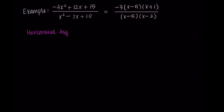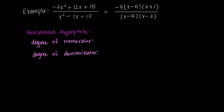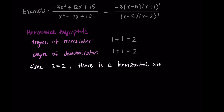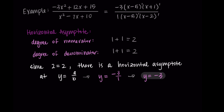Now we do the horizontal asymptotes. We compare the degrees of the numerator and the denominator. Looking at the standard form, the highest degree exponent is 2 for both polynomials — or using the factored form, 1 plus 1 equals 2 for each. Since the degrees are equal, there is a horizontal asymptote at y equals a over b, where a and b are the leading coefficients. In the numerator, the leading coefficient is negative 3, and in the denominator it's 1, so the horizontal asymptote is at y equals negative 3.